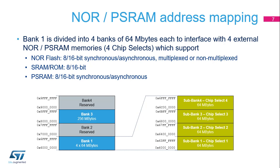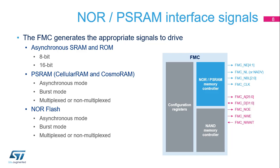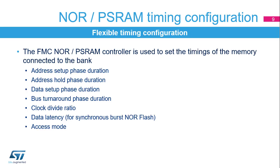Bank 1 is used to address up to four NOR Flash memories or PSRAM devices. This bank is split into four NOR or PSRAM subbanks of 64 MB each, with four dedicated chip selects to interface with 8- or 16-bit synchronous or asynchronous NOR Flash in multiplexed or non-multiplexed mode, 8- or 16-bit asynchronous SRAM and ROM, and 8- or 16-bit synchronous or asynchronous PSRAM memories. The FMC outputs a unique chip-select signal to each subbank and performs only one access at a time to an external device.